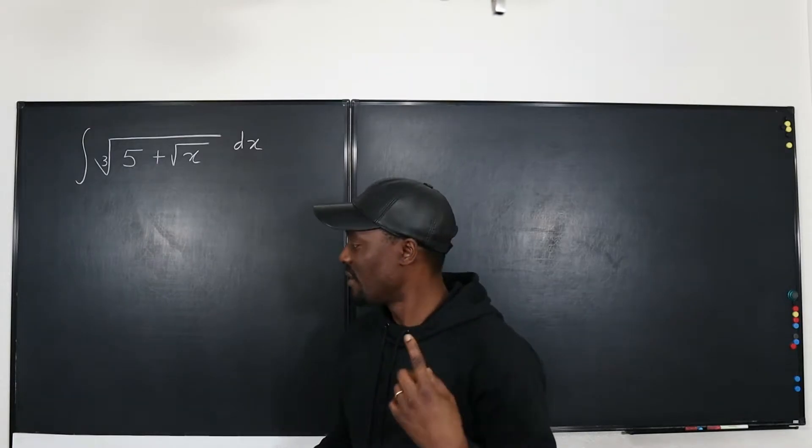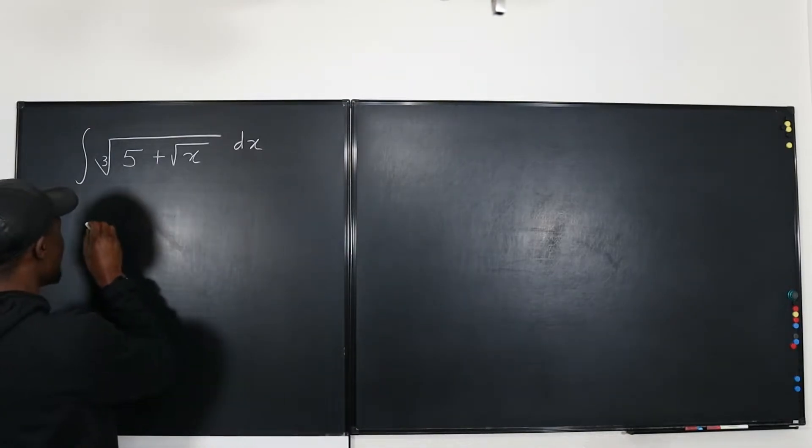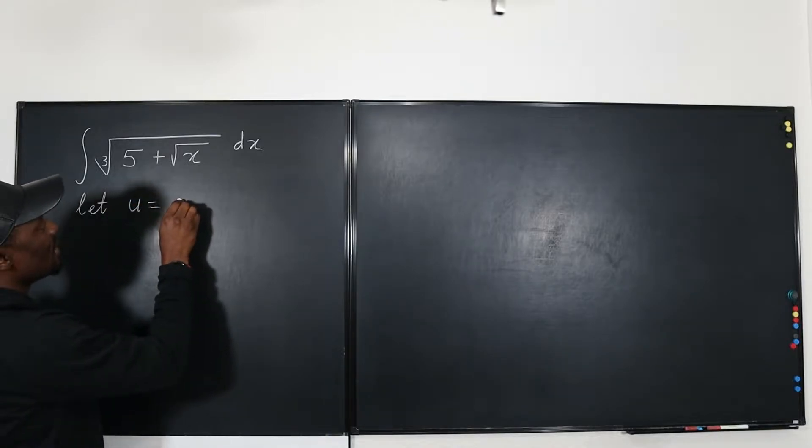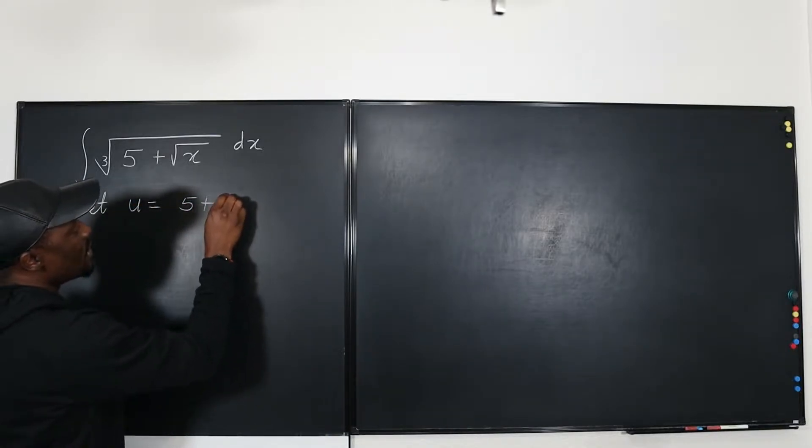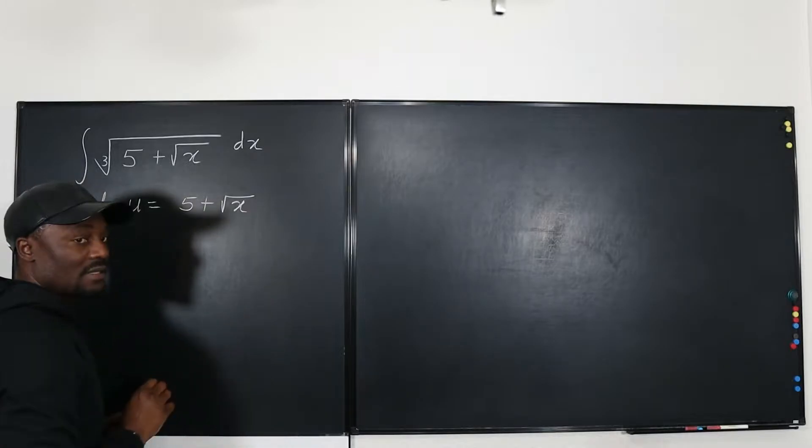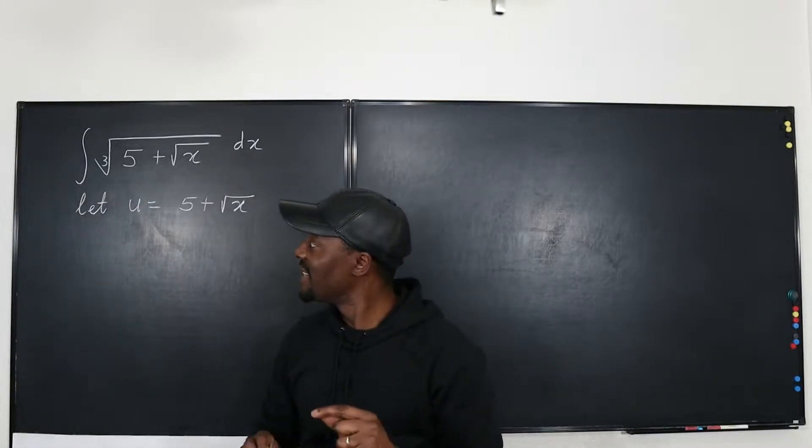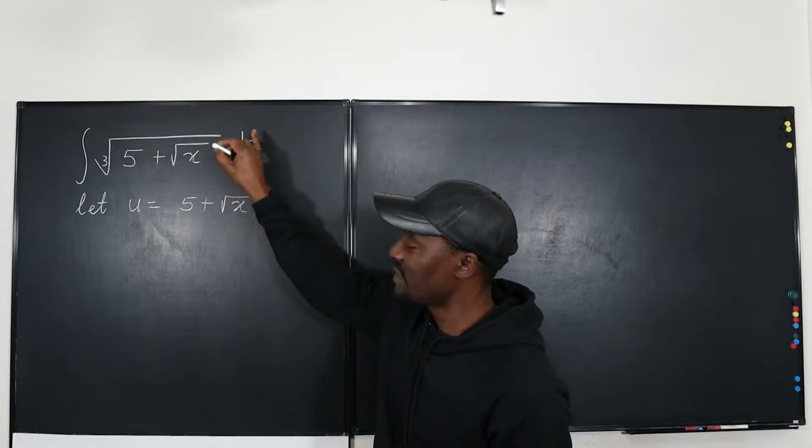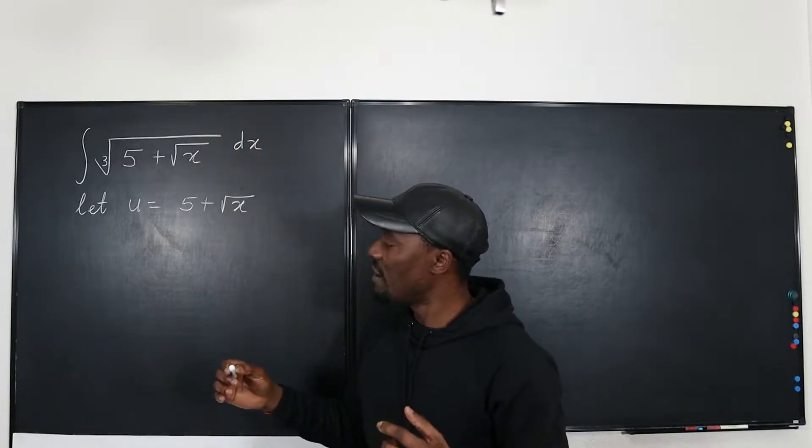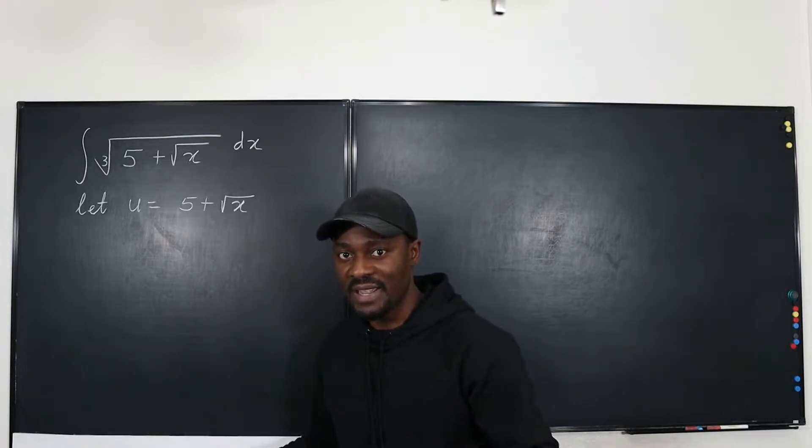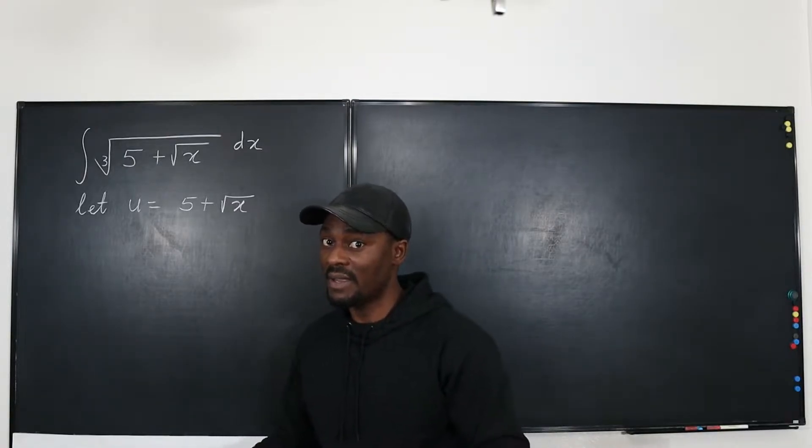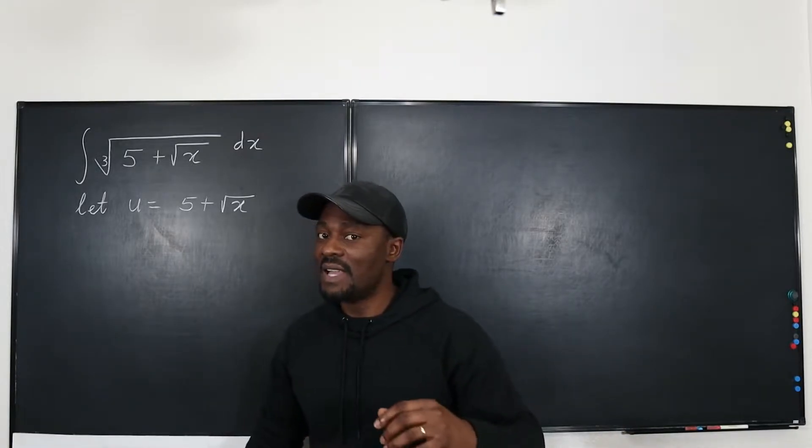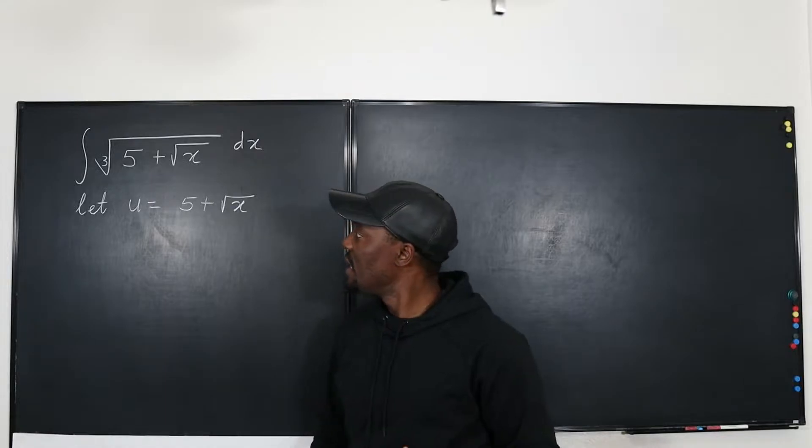So this is how we're going to start. We're going to say let u be equal to 5 plus the square root of x. And with that, we will investigate if it's possible for us to replace dx with du without making things more complicated. If it gets more complicated such that you cannot integrate, you need another kind of help, then maybe that's not the best choice.